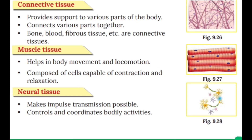Neural tissue makes impulse transmission possible and controls and coordinates body activity. Neural tissue sends control signals throughout the body to coordinate all body activities.